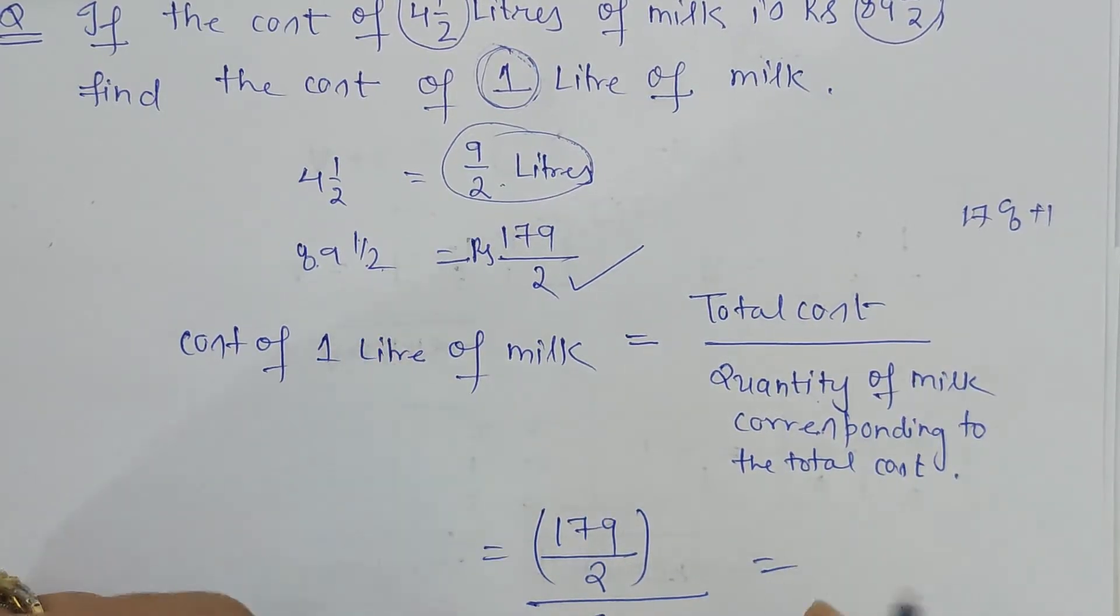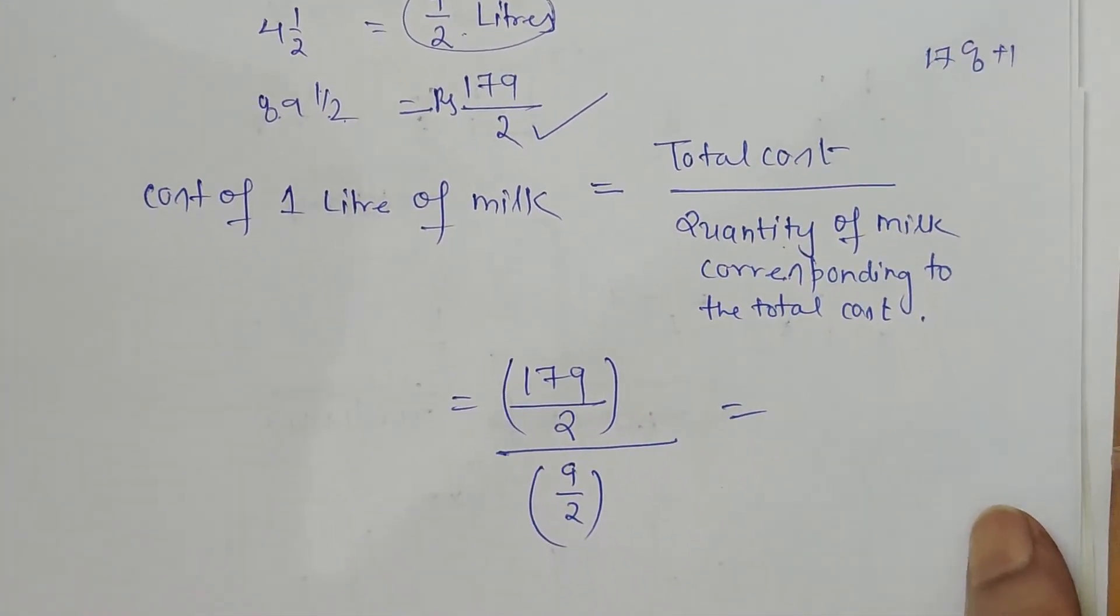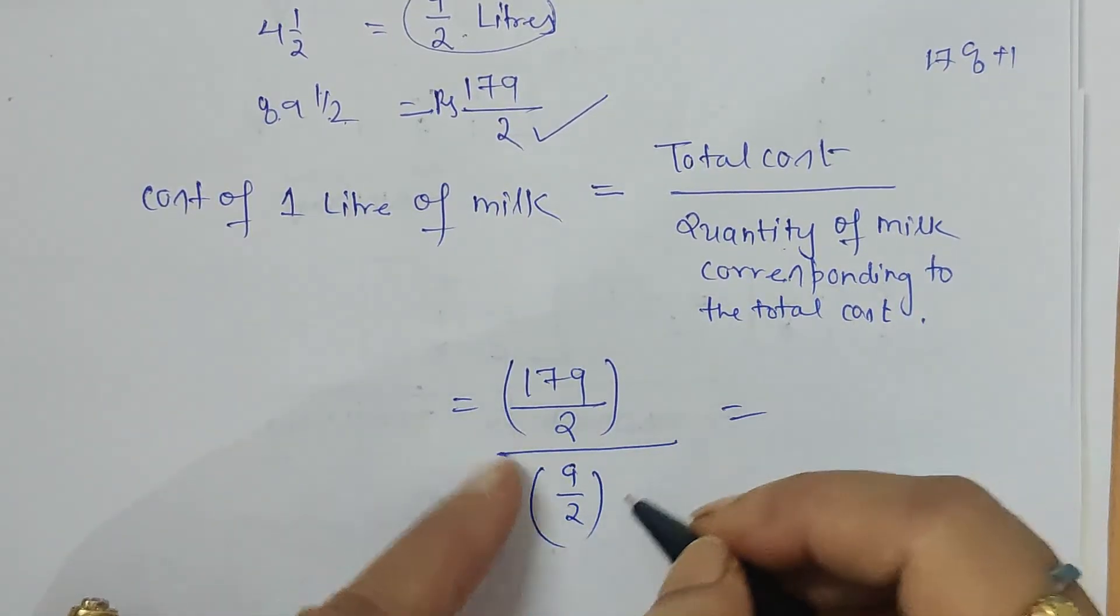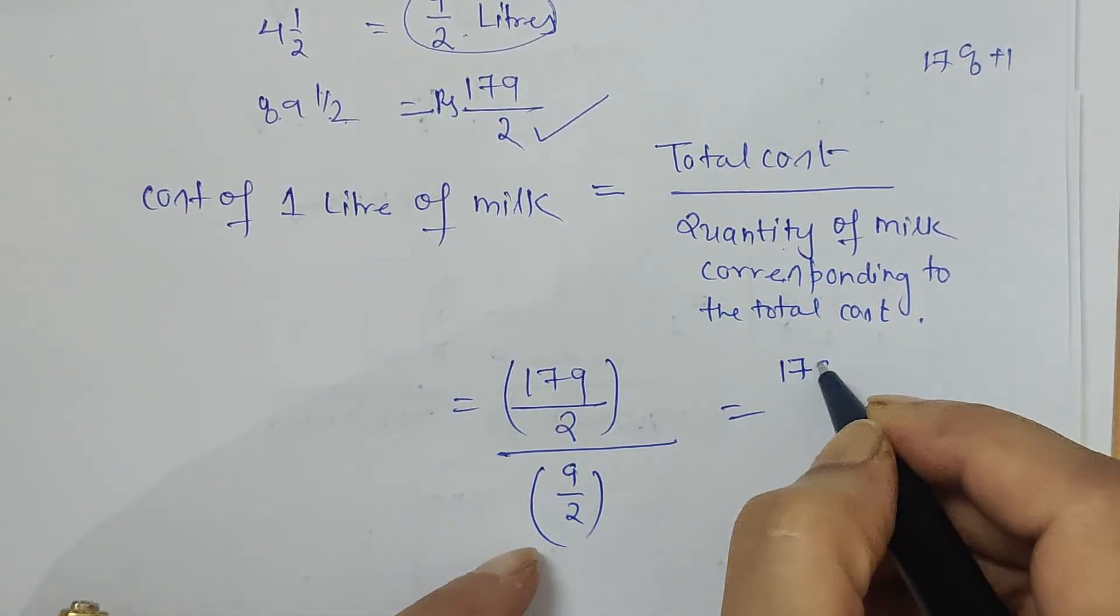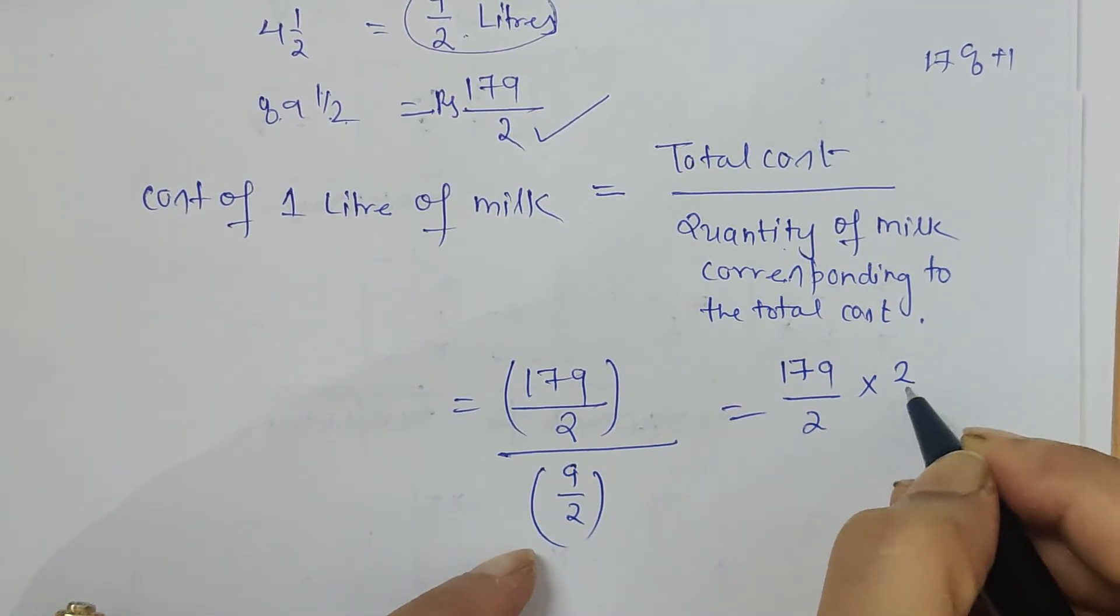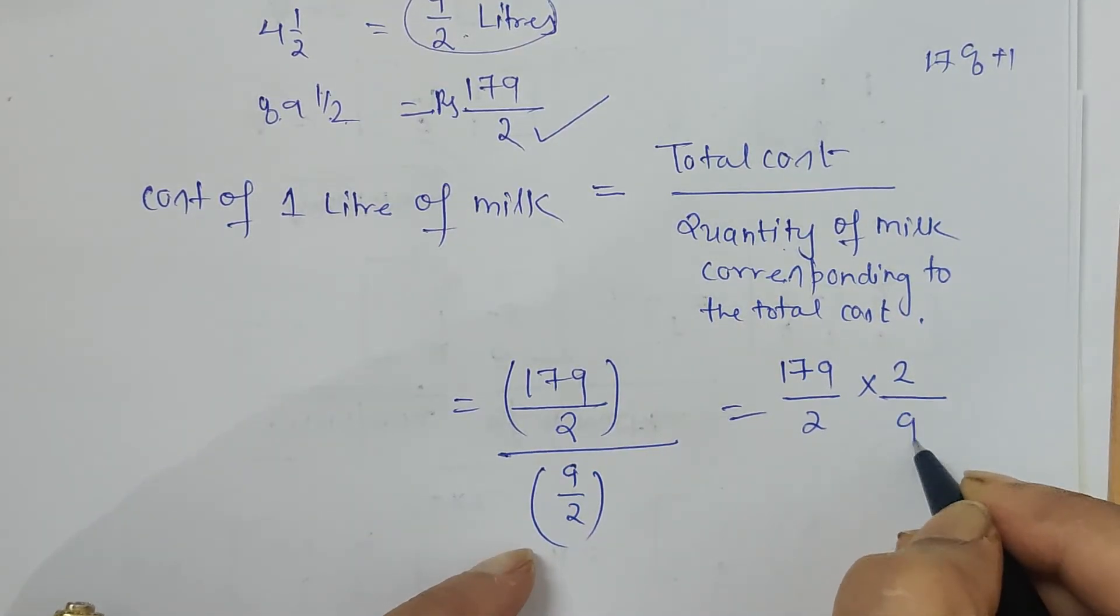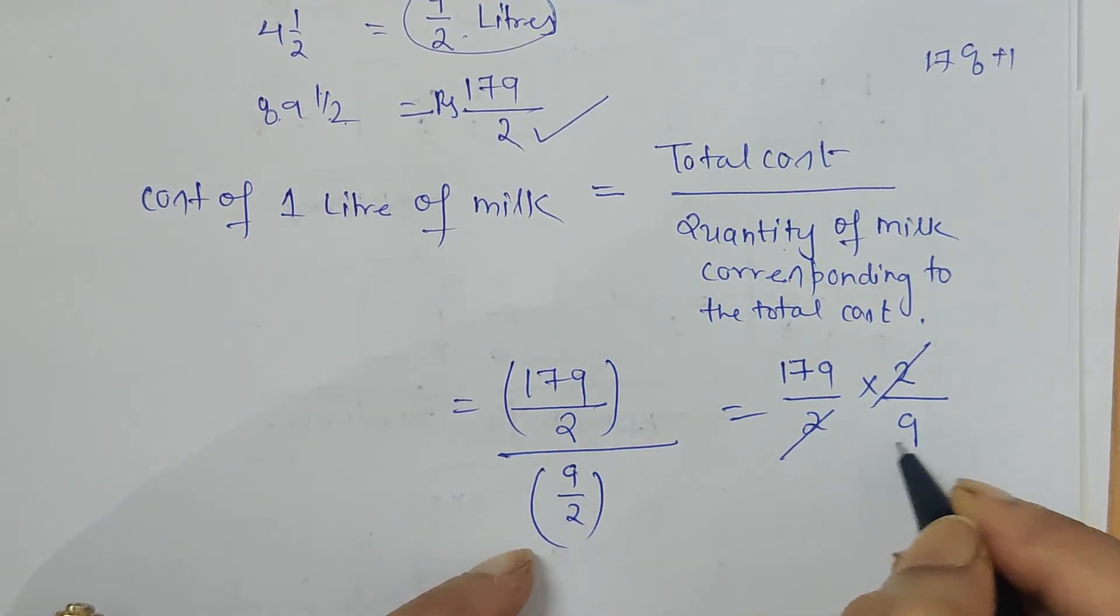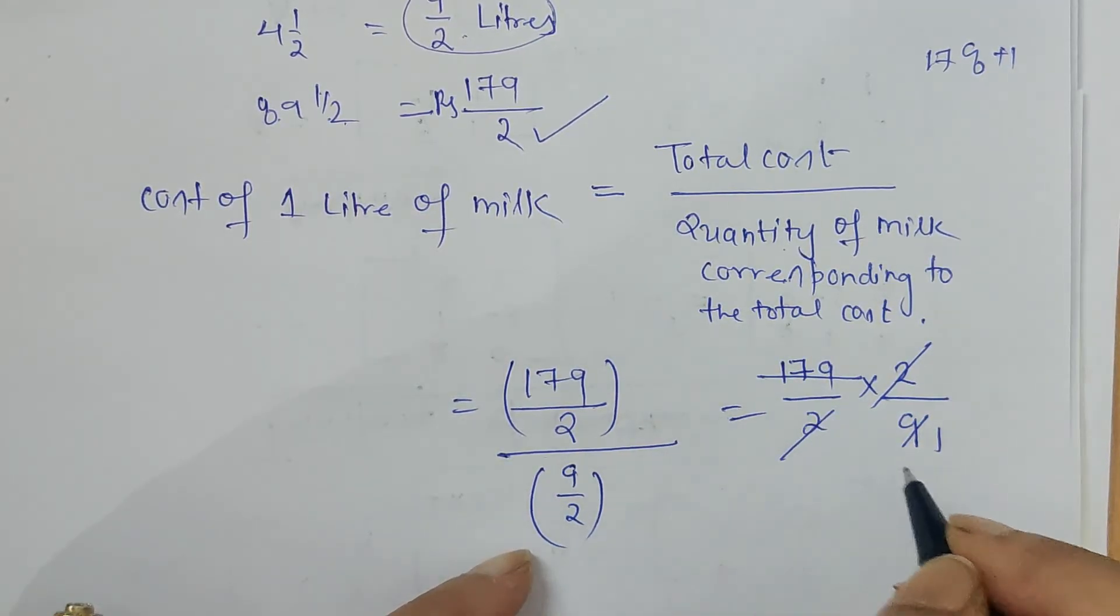When we reciprocate it, when we multiply it, the denominator gets reciprocated, so it is 2 upon 9. Two and two gets cancelled. Now 9, 1 is 9.